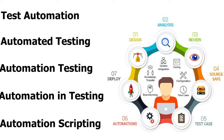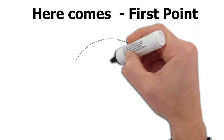These are the seven different phases involved in test automation. Other important things like knowledge transfer, system integration, coding, configuration, timelines, brainstorming, DevOps, and continuous integration will be covered in a separate video. Today we focus on why test automation fits as the best solution. The seven phases are: design, analysis, review, source safe, test case automation, and deployment.